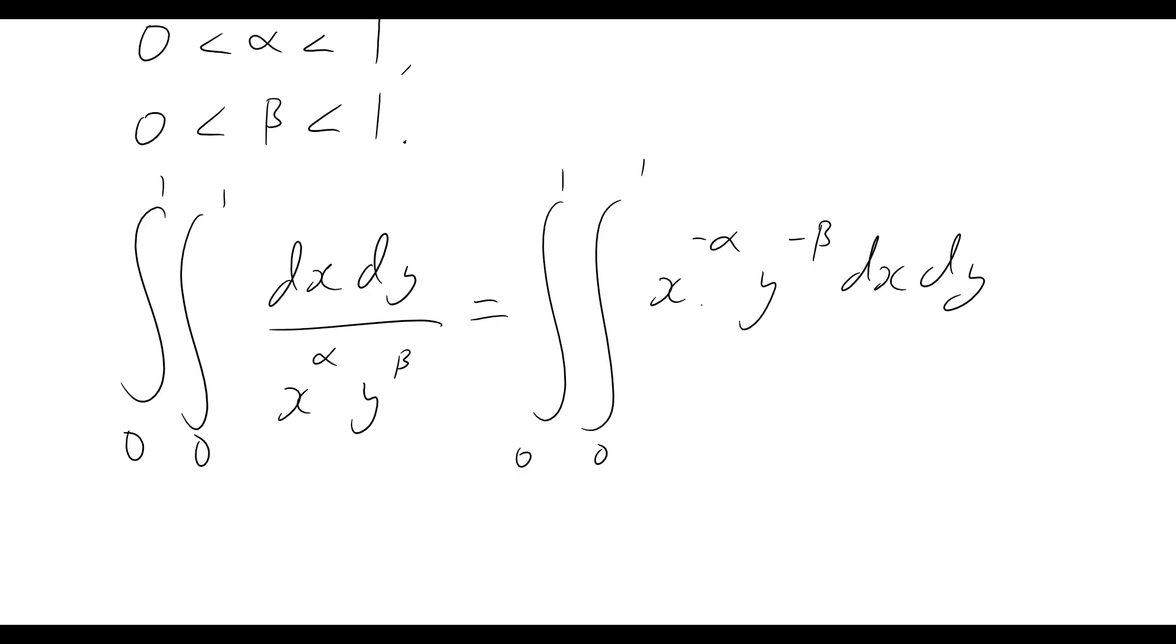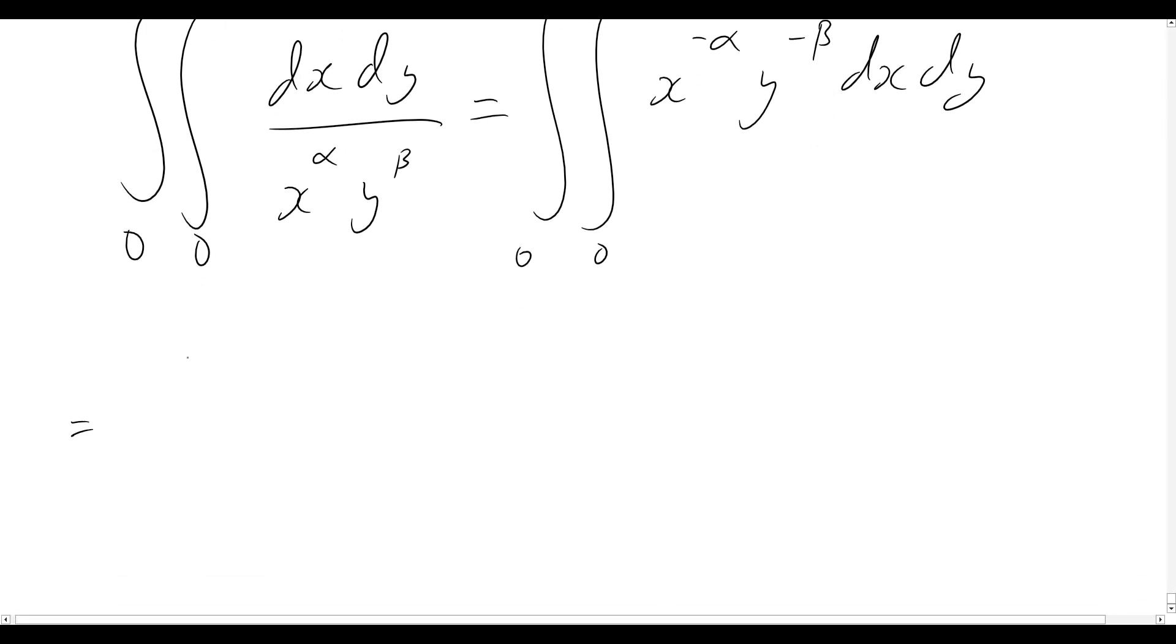Okay, so now let's integrate this with respect to x first. So integrating x to the minus alpha, we'll have still the integral from zero to one with regards to our y, and now inside here, we've got x to the minus alpha plus one, since we are integrating that, and then we divide by minus alpha plus one. I'm going to close that off there, and we're substituting in values from zero to one, and on the outside we'll have y to the minus beta dy.